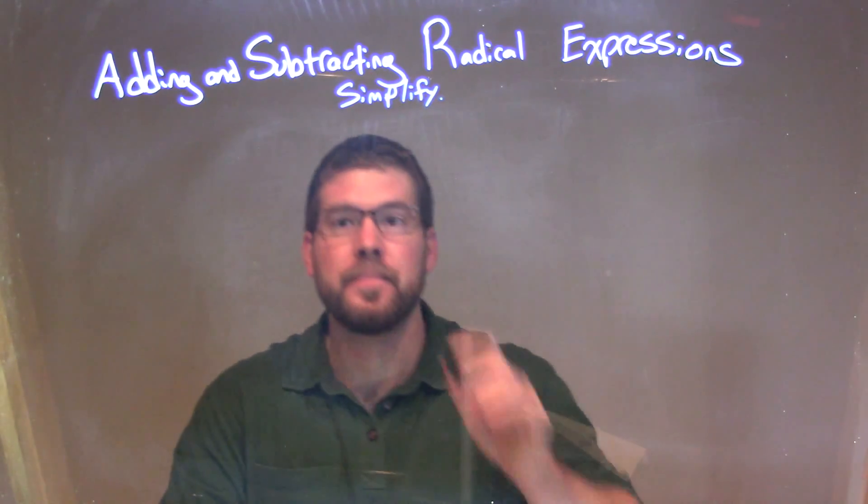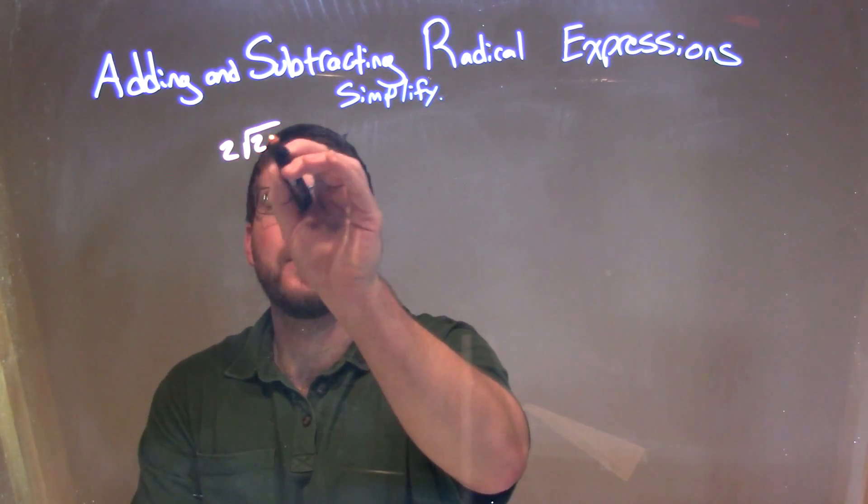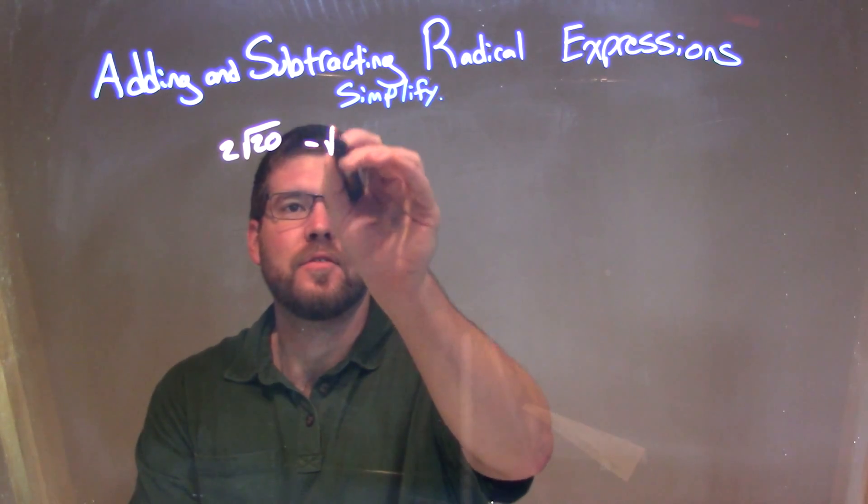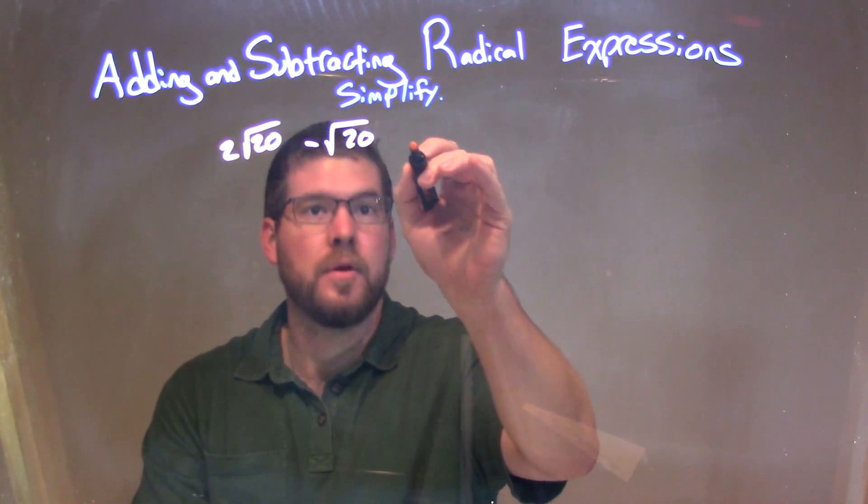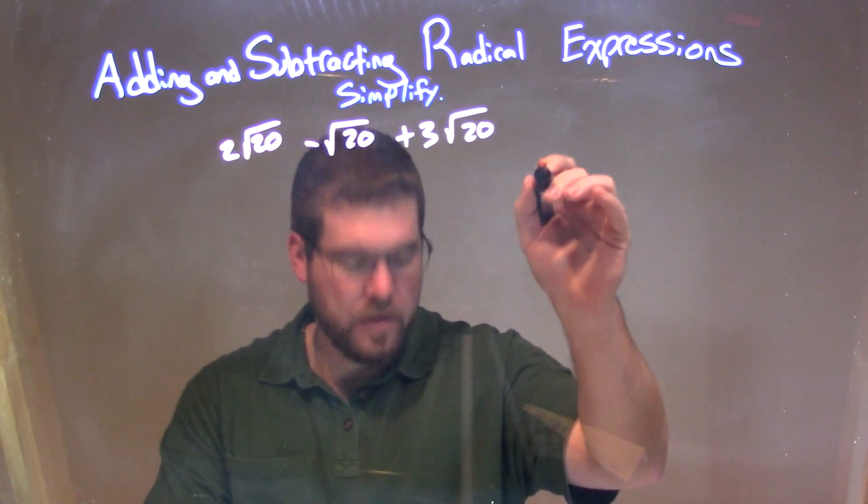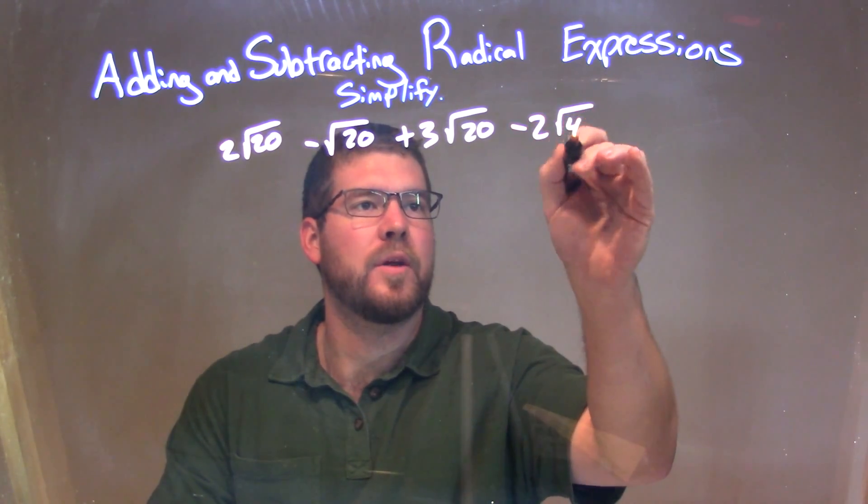So if I was given this expression: 2 times the square root of 20, minus the square root of 20, plus 3 square root of 20, minus 2 square root of 45.